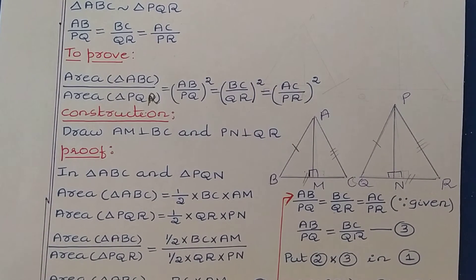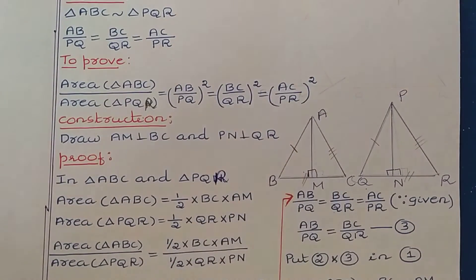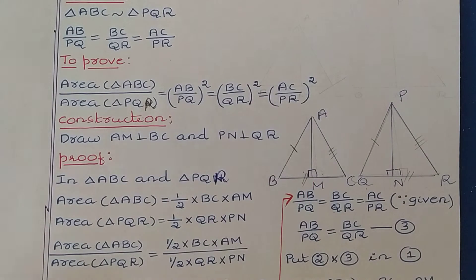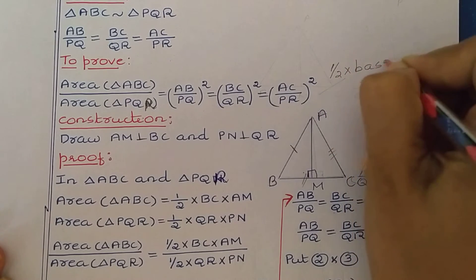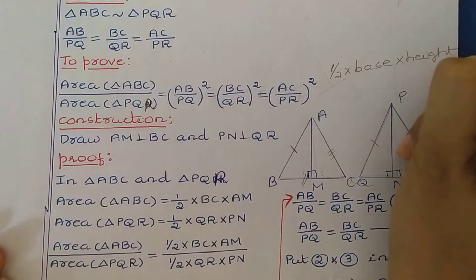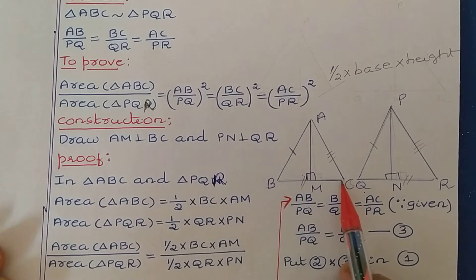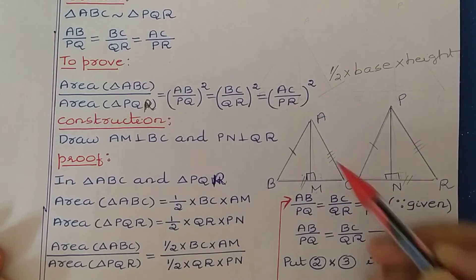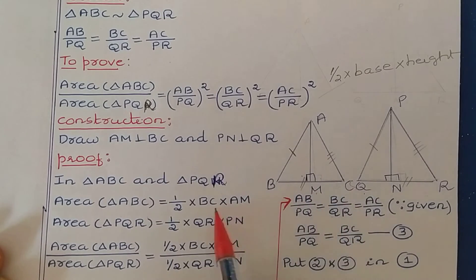Now let us write the proof of this theorem. To find the area of a triangle, the formula is: Area = ½ × base × height. First let us find the area of triangle ABC. If we take BC as base, then AM is perpendicular to BC, so AM is the height. Therefore, Area(△ABC) = ½ × BC × AM.